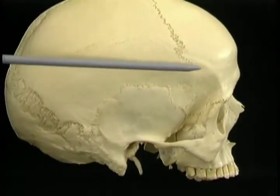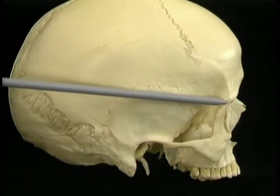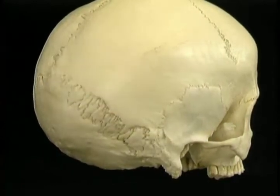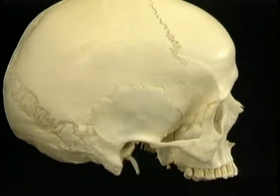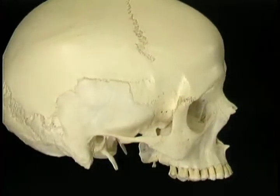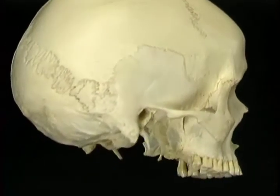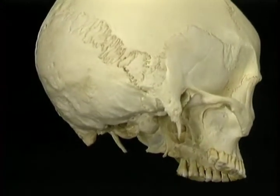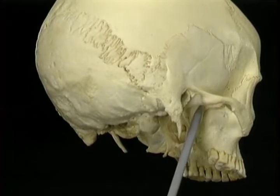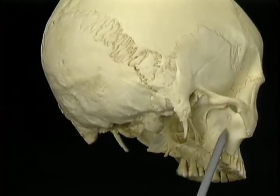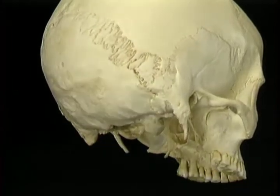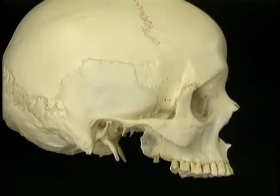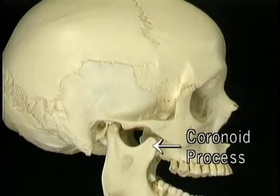The temporal fossa is enclosed by the temporal line, the lateral orbital margin, and the zygomatic arch. It contains the large temporalis muscle. The temporal fossa is continuous with a deeper hollow, the infratemporal fossa. The walls of the infratemporal fossa are formed by part of the base of the skull and by the posterior part of the maxilla. The infratemporal fossa contains the pterygoid muscles and also the coronoid process of the mandible.